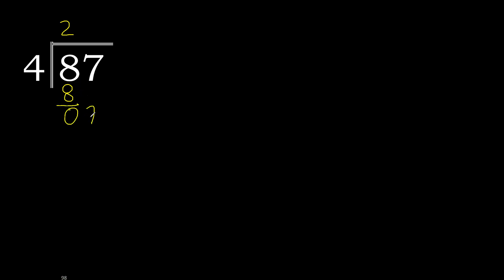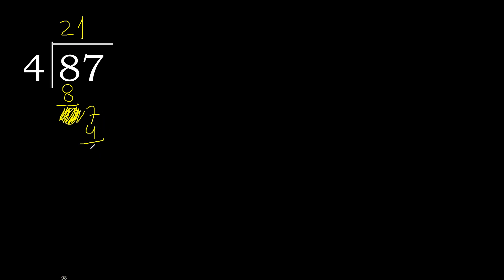Next, eliminate 0 on this side. 7. 4 multiply by 1 is 4. 7 minus 4 is 3.